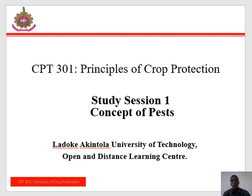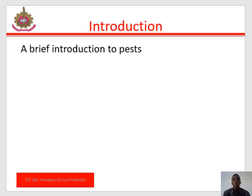Hello students, welcome to today's lecture series on CPC 301: Principles of Crop Protection, Study Section 1. The title of today's topic is 'Concept of Pest Introduction.' It is estimated that world crop losses due to pests are of the order of about 35% of potential yield, but in most tropical countries the field and storage losses are of higher magnitude.